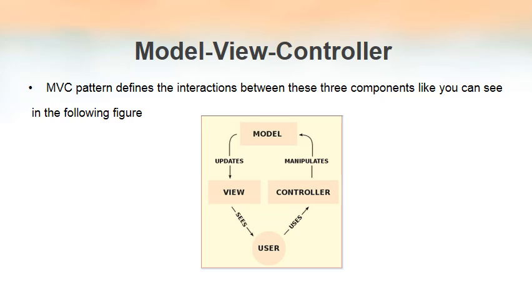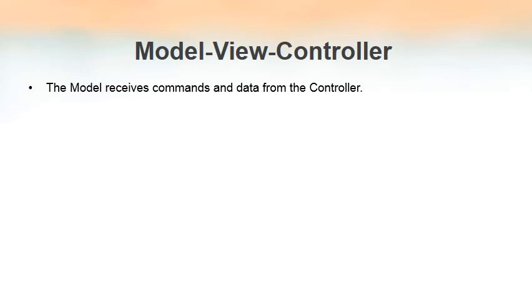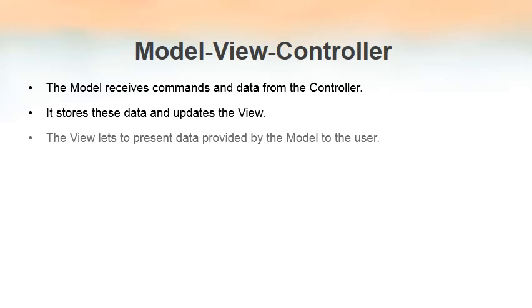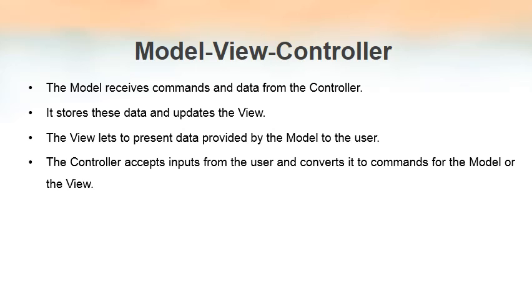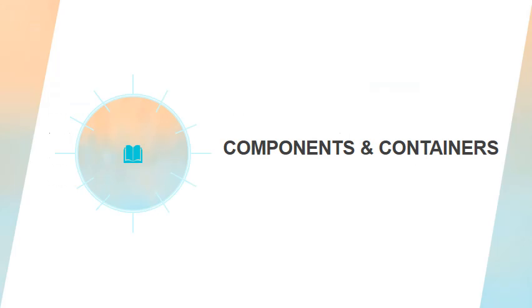As you can see in the picture, the user uses the Controller to input data. The data is manipulated by the Model, because that is where our logic and all the rules of the application are written. The Model then updates the View, which is what the user sees. The Controller accepts input from users and converts it to commands for the Model or the View.